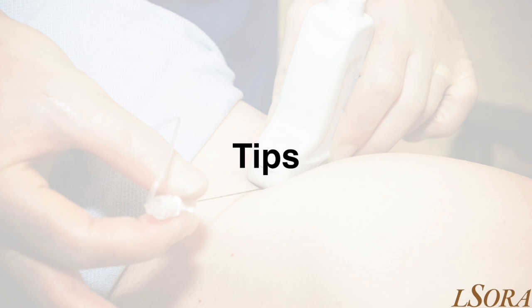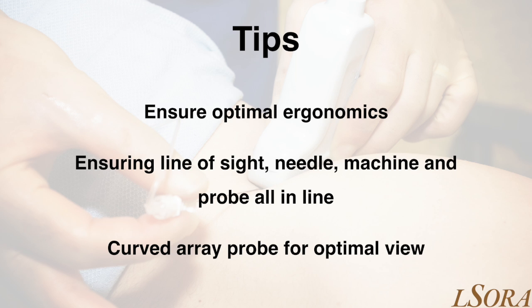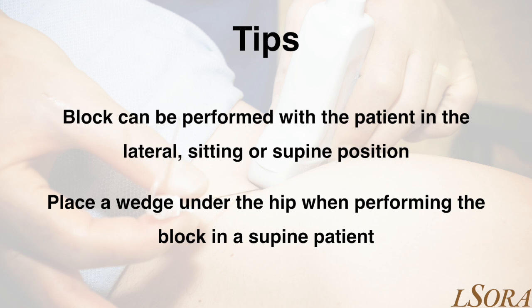We'd like to share some pearls for performing a quadratus lumborum block. As always, please pay attention to ergonomics — allow yourself, the machine, and the needle all to be within the direct line of sight. It is often easiest to use a curved array transducer to appreciate the surrounding anatomy more clearly. The patient can be blocked in the lateral position, which is often easiest, in the sitting position scanning from the posterior aspect, or supine. If performing the block with the patient supine, it is easier to place a wedge under the hip to allow the probe to reach the posterior abdominal wall.